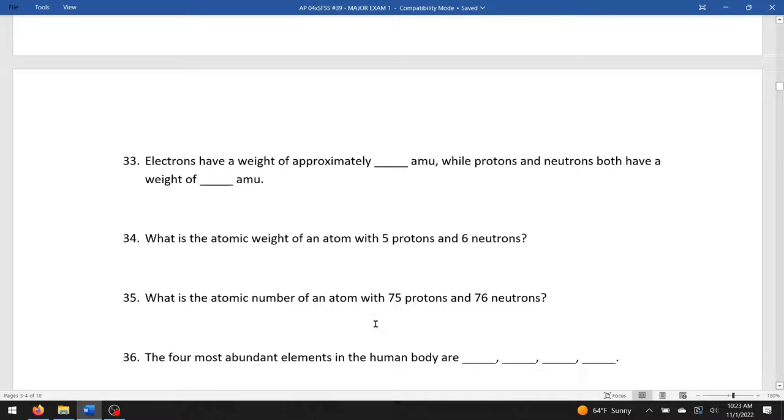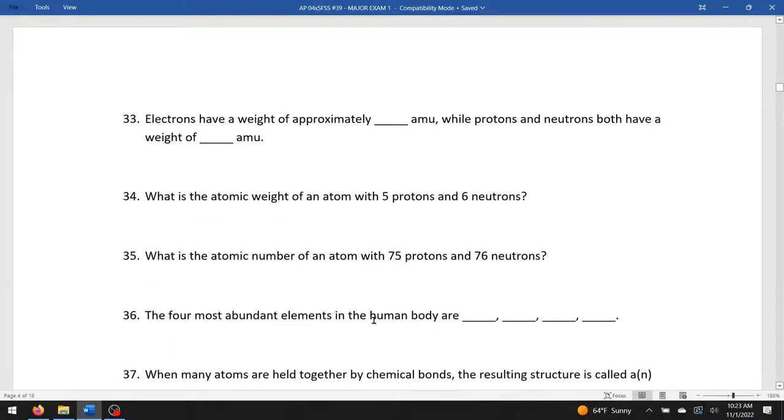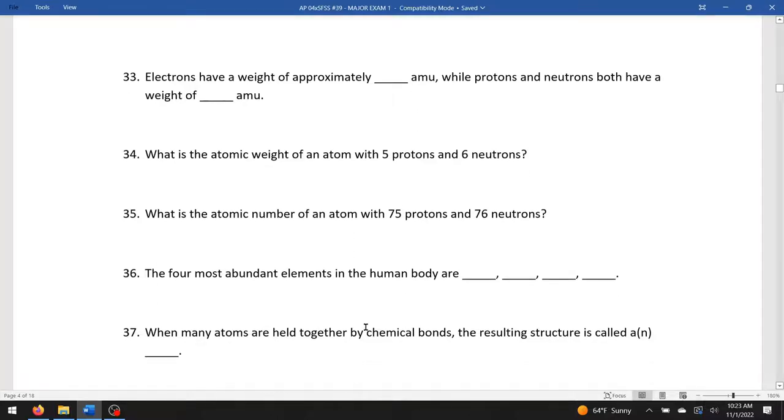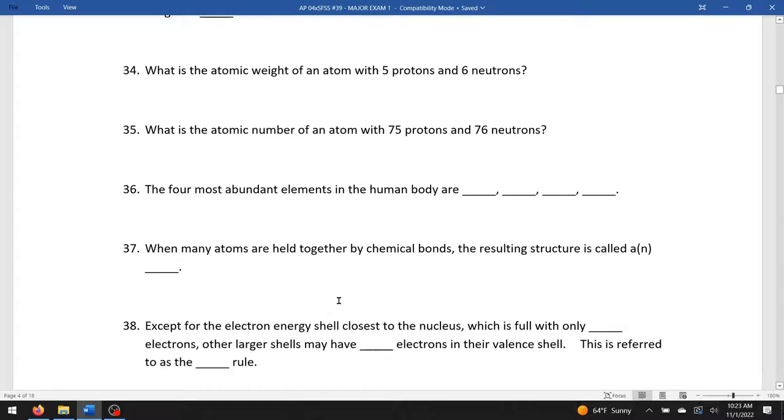Four most abundant elements in the human body are CHON: carbon, hydrogen, oxygen, nitrogen. When many atoms are held together by chemical bonds, the resulting structure is called a molecule. Except for the electron energy shell closest to the nucleus, which is full with only two. Other larger shells may have eight electrons in their shell. This is referred to as the octet rule. So the first blank would be two, the second blank will be eight, and the third blank would be octet.